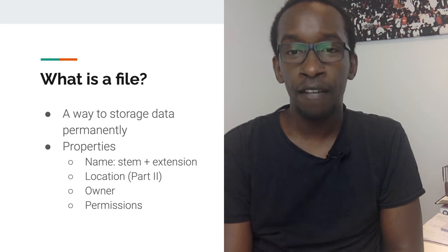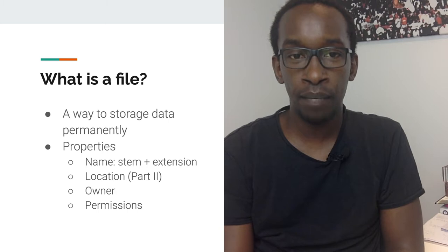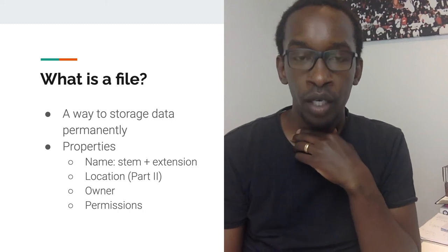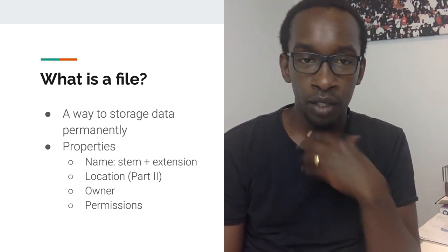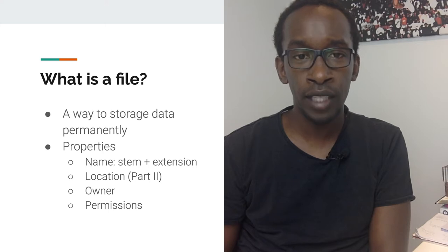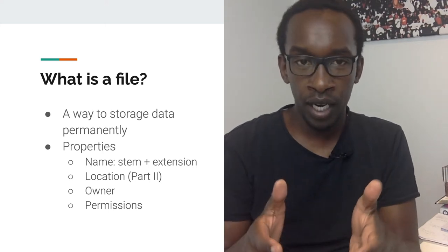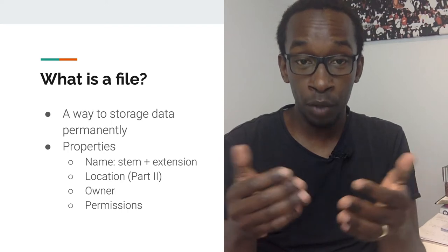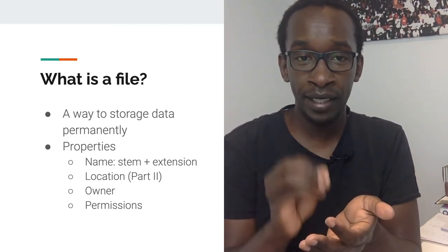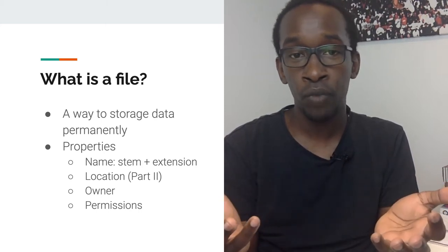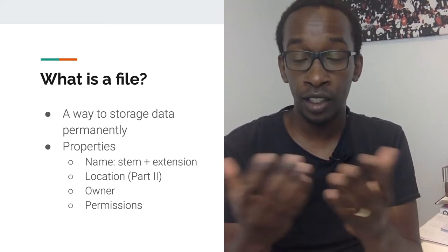What is a file? A file is a way to store data permanently. As you continue working with programs, you realize there are many ways files can be used. We typically think of files as what we have on the file system — something with a name. Anytime you create a Word document or download a PDF, that's a file: a store of data.